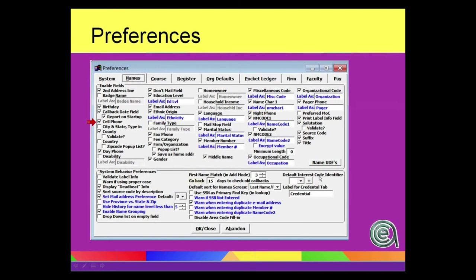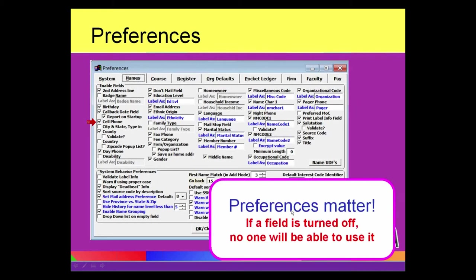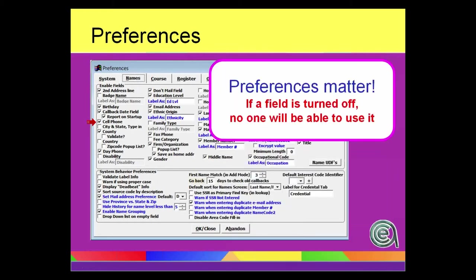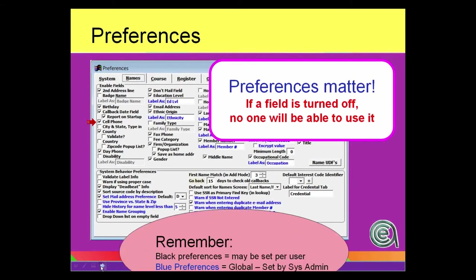When we talk about codes, one of the things we want to emphasize is that in the preferences area, which we're going to cover next webinar, you've got to pay attention to that, because if you've turned off a field, nobody can see it, nobody can use it.